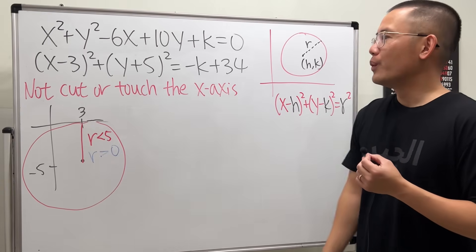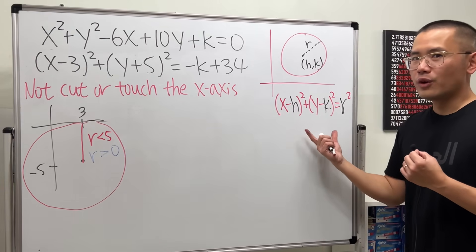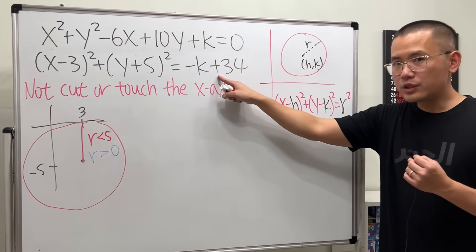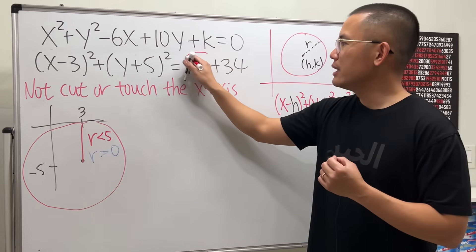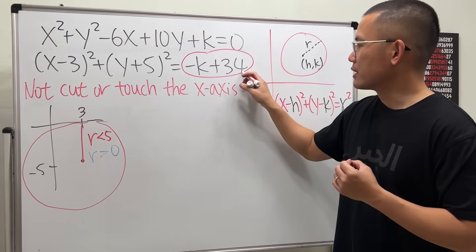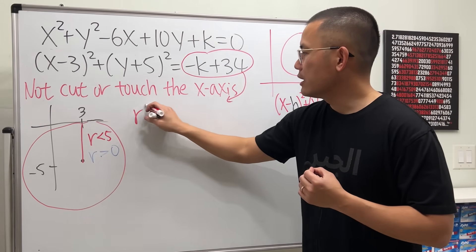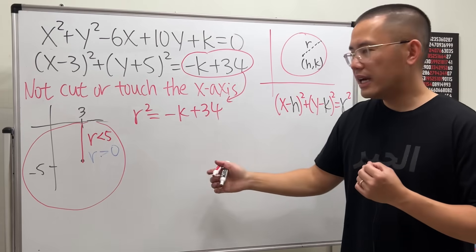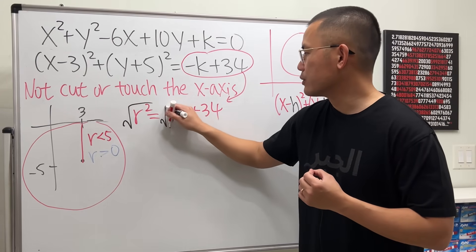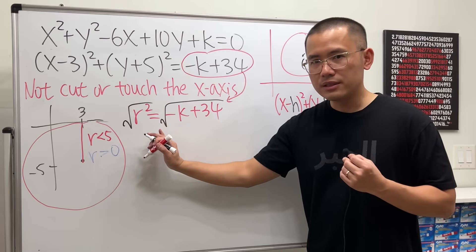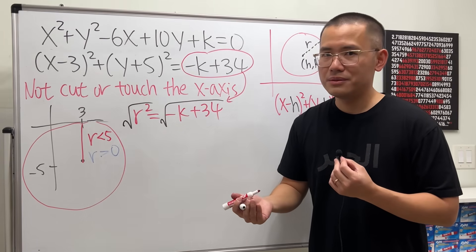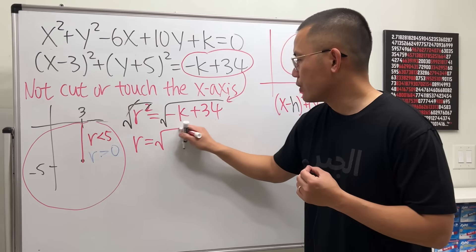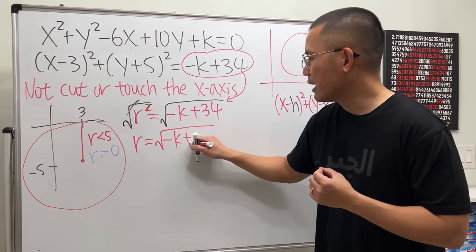Now, what is r? Well, remember, this is the standard form of the circle. We have this equals r squared, right? So that means if you look at this part, that must be r squared. So I'll put this down. r squared must be equal to negative k plus 34. And then we can just take the square roots to both sides. Just the positive square root, though, because r is the radius, it has to be positive. So r is just the positive square root of negative k plus 34.